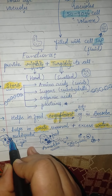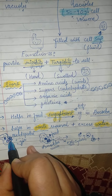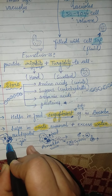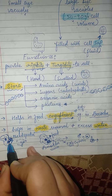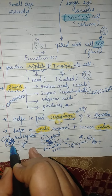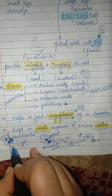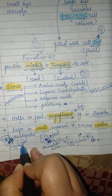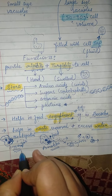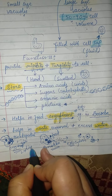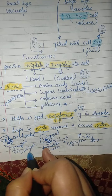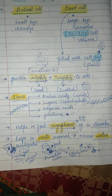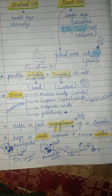The food vacuole takes in food along with enzymes and proteins to digest it. After digestion, waste material is created.